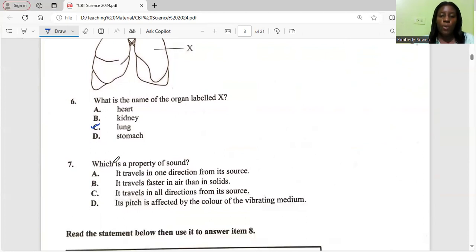Which is a property of sound? It travels in one direction from its source, it travels faster in air than in solid, it travels in all directions from its source, or its pitch is affected by the color of the vibrating medium. The correct property of sound here is that it travels in all directions from its source.